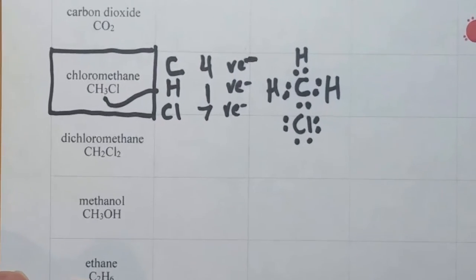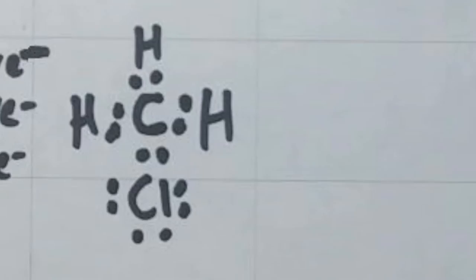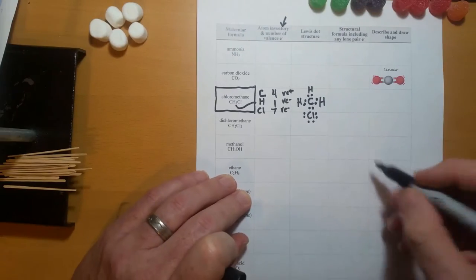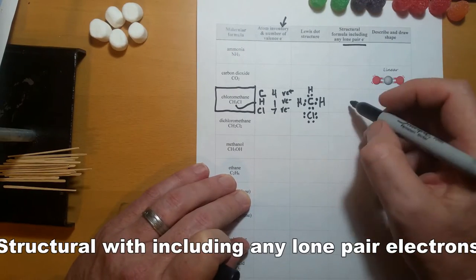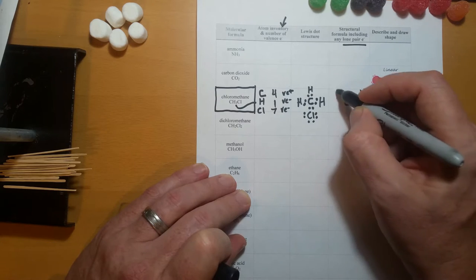One chlorine with seven valence electrons has a bond to carbon and three lone pairs. The structural formula includes any lone pairs.